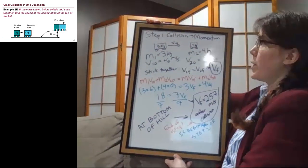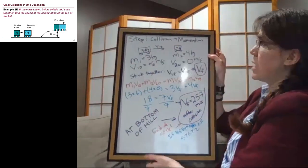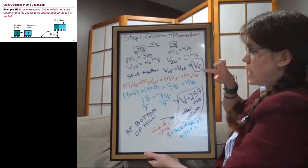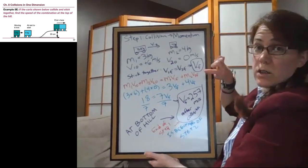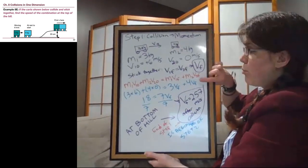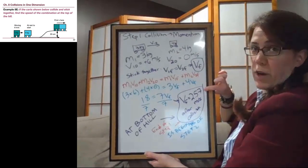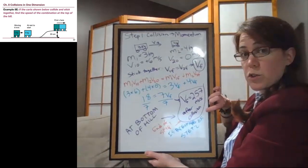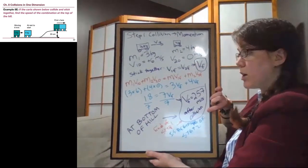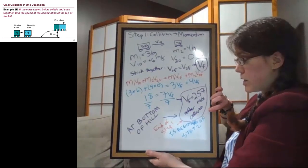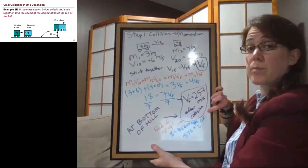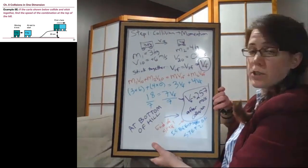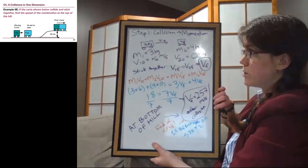All right, so so far we have that the step 1 collision, we made a picture, we listed the given information, we figured out what we're looking for. The momentum conservation equation in red, plugging in the numbers in blue, solving for that final velocity of step 1. But that end of step 1 speed is just how fast the pair of carts together are moving at the end of step 1, at the bottom of the hill. And that becomes the beginning of step 2. So if you need to, you can pause the video to make sure you understand this first step, but I'm going to have to erase some of it for space.